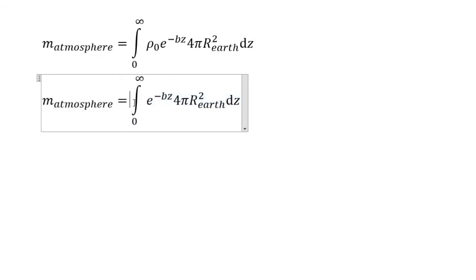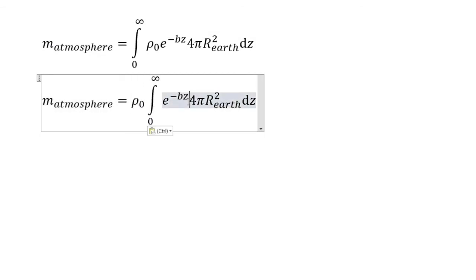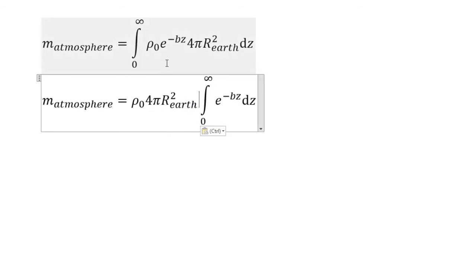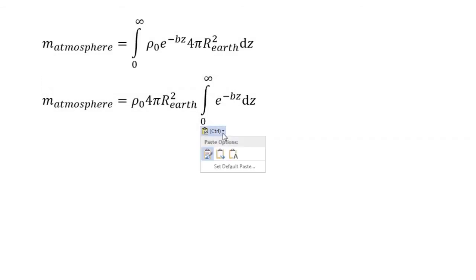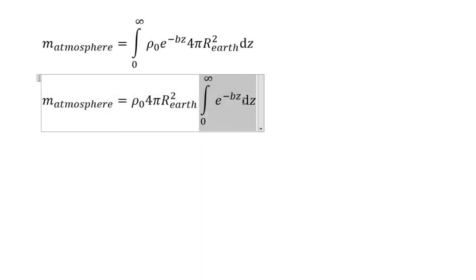This is a constant, so we move it out. This term here is also a constant, so it's moved out as well. Now we have to solve this integral. As you can see, this is an improper integral, so we'll be dealing with some limits calculations — but no big deal. Let's compute this integral.